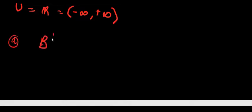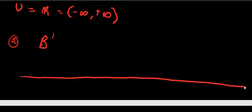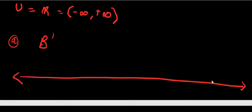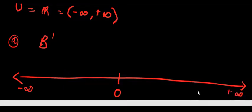We have been asked to find set B complement. The first thing we need to understand is that we are going to compare set B to the universal set. Since the universal set is the set of real numbers, we are going to demarcate the negatives from the positives, whereby this side is negative infinity and this side is positive infinity.